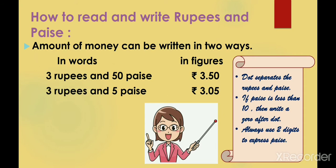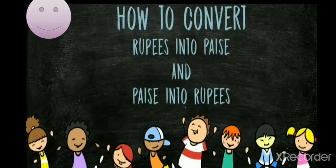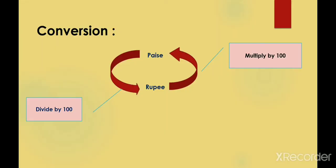Now let's see how to convert rupees into paise and paise into rupees. In Indian currency, 1 rupee equals 100 paise. To convert rupees into paise, you have to multiply by 100. And if you want to convert paise into rupees, then you have to divide by 100.